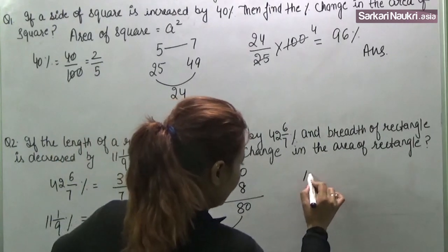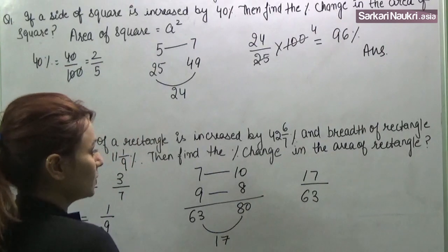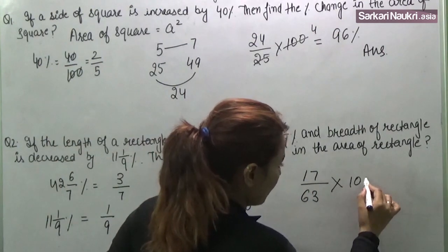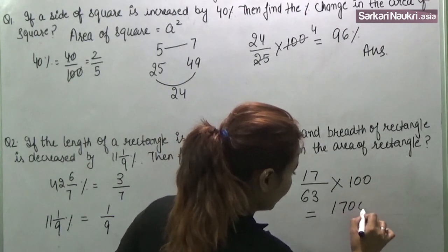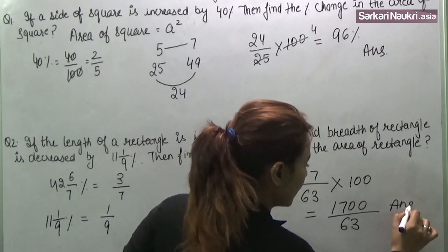So it is 17 on 63. But we need to find the percent change. So we will multiply by 100. The answer will be 1700 by 63. This will be the answer.